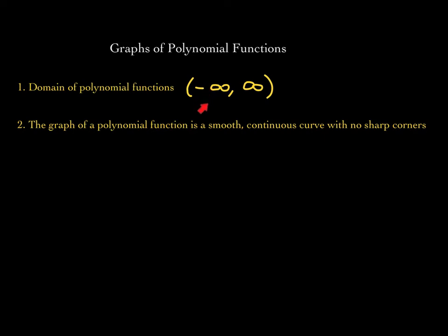Unless otherwise specified, the domain of polynomial functions is all real numbers. The graphs of polynomial functions extend indefinitely to the left and to the right. Also, the graph of a polynomial function is always a smooth, continuous curve with no sharp corners. A continuous curve implies that you can draw the whole graph without lifting up your pencil.